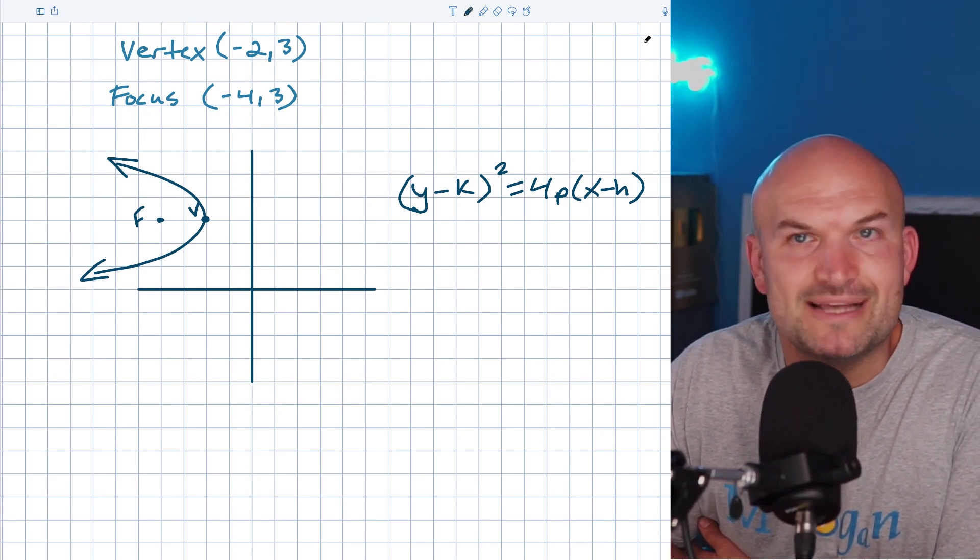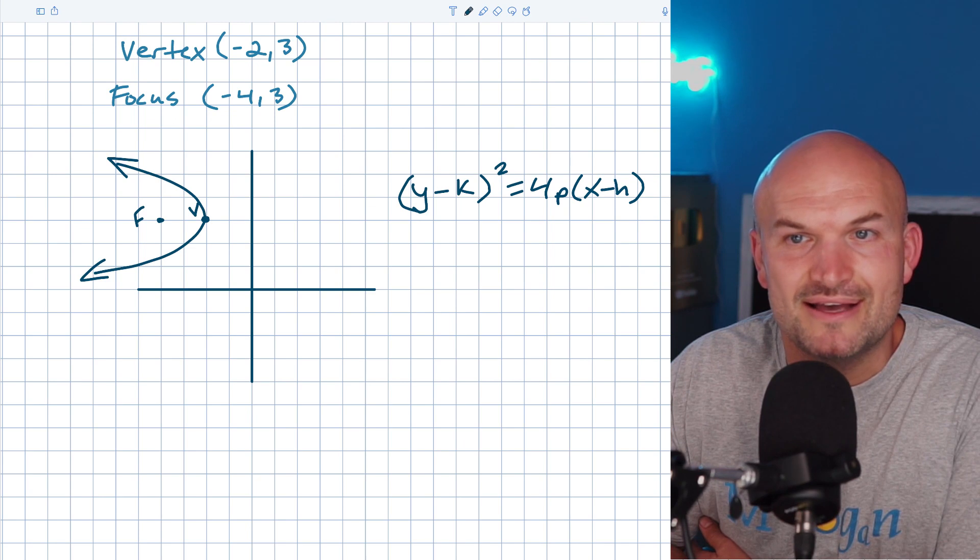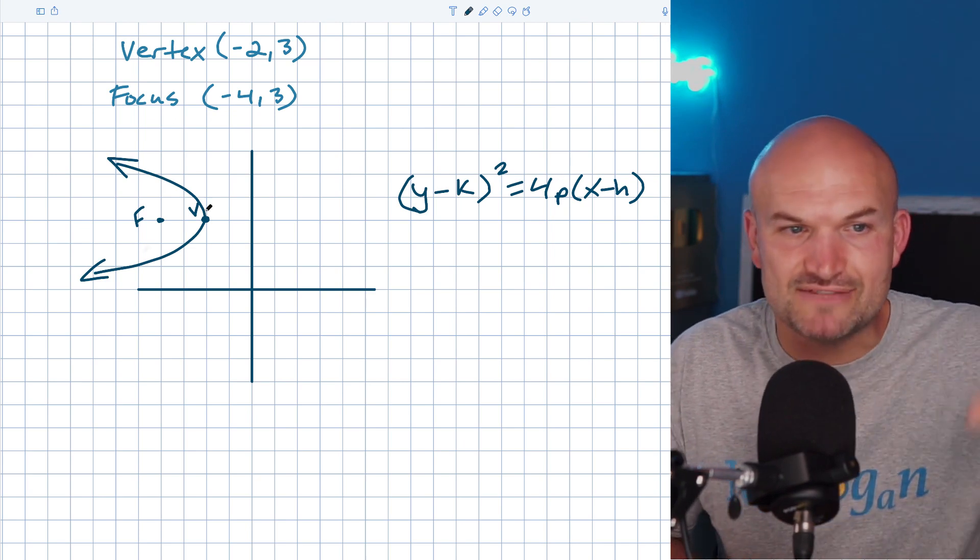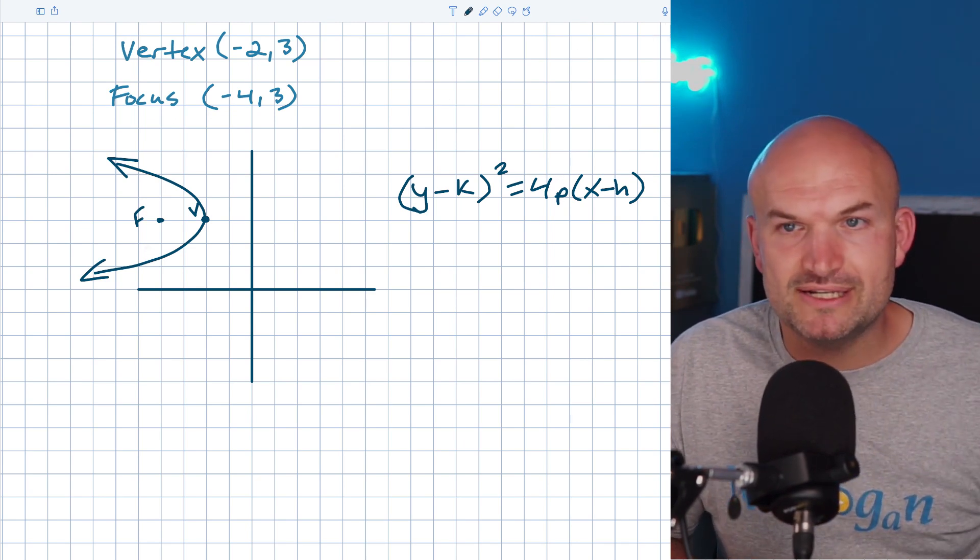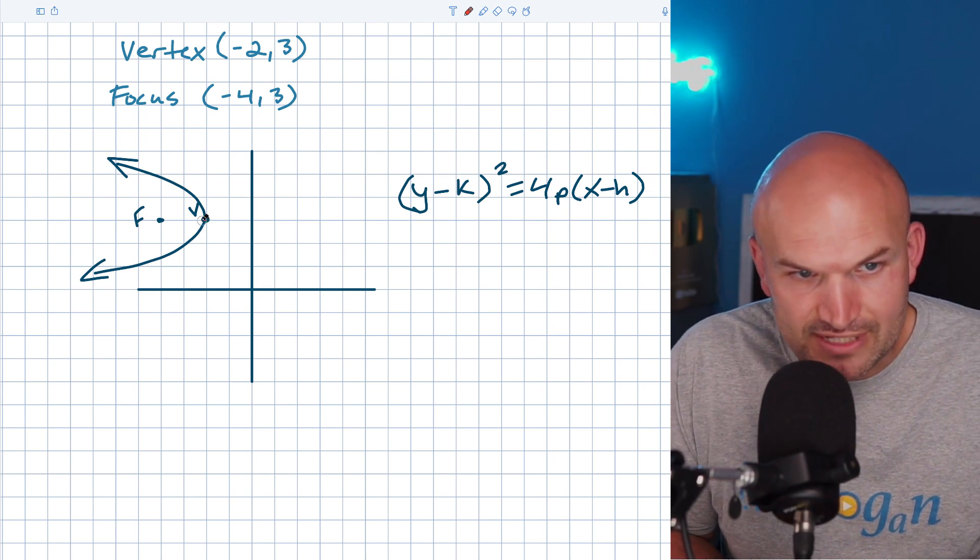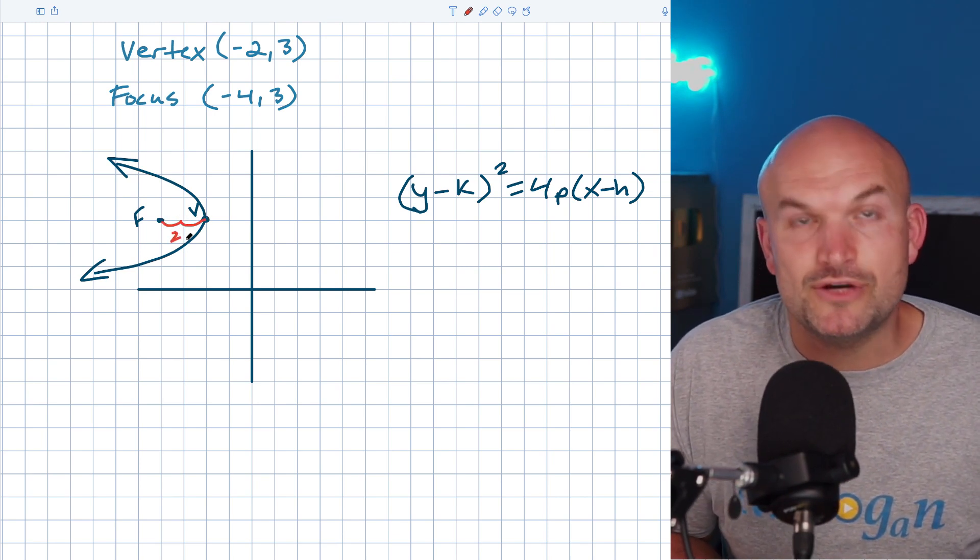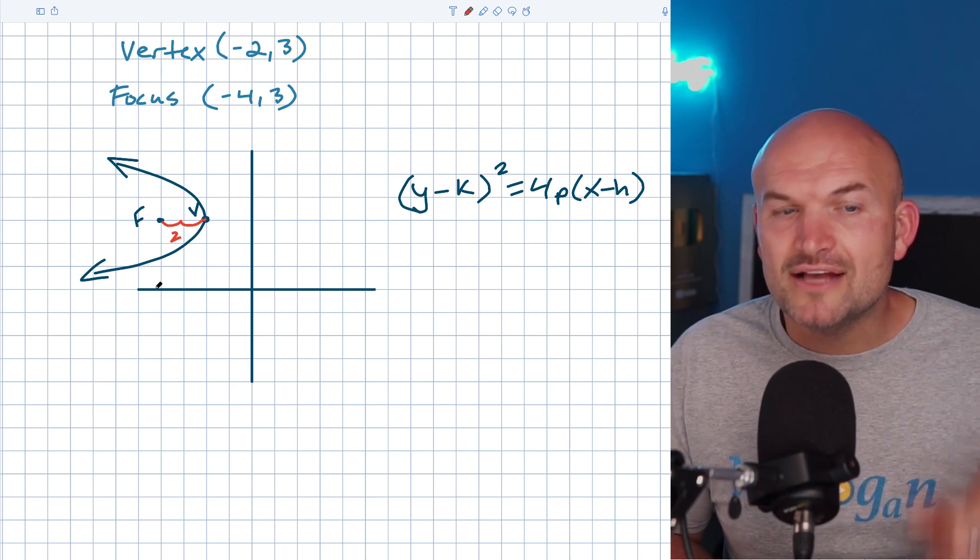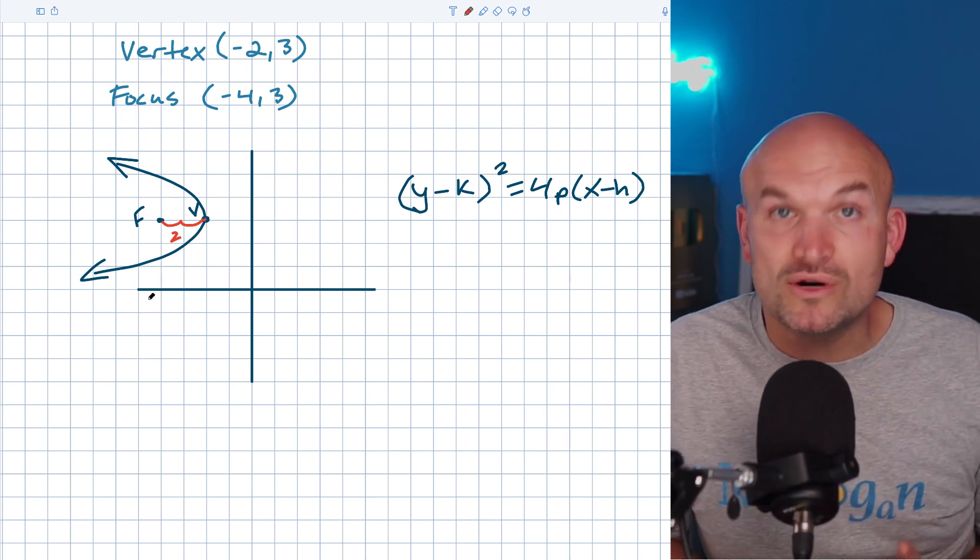So then we need to understand, what is that P? P is going to be your distance from your vertex to your focus. So we just need to be able to count this. How far is it from the vertex to the focus? And you can say that's going to be a value of two. It is.